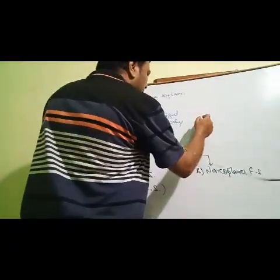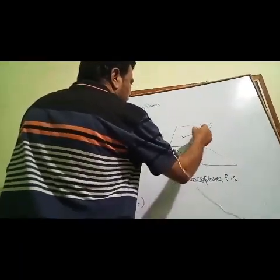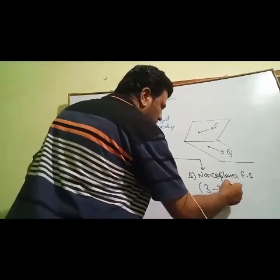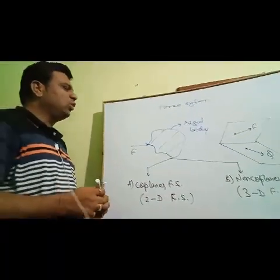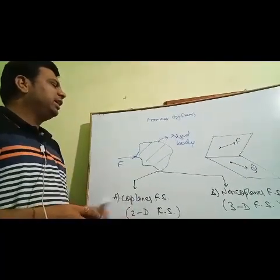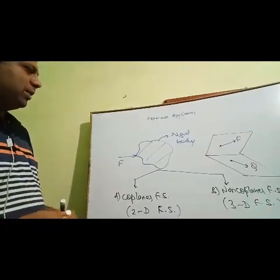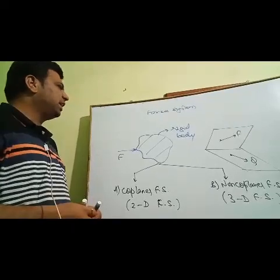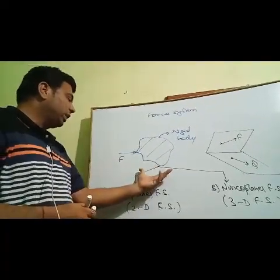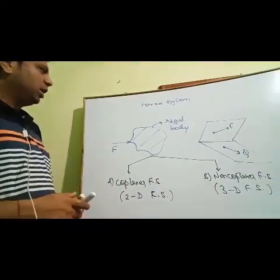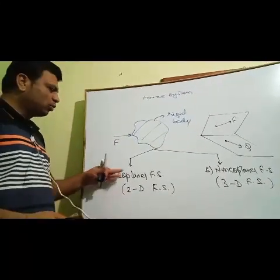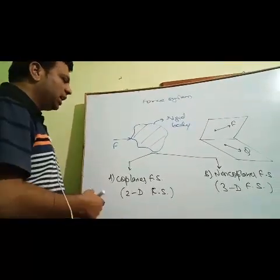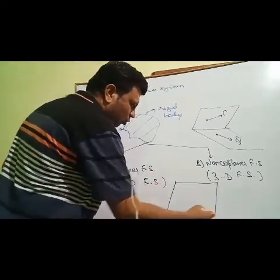When the forces acting on a rigid body do not lie in a single plane, then it is known as a non-co-planar force system or three-dimensional force system. There are two types of force system: co-planar and non-co-planar. If the forces lie in one plane it is co-planar; if they do not lie in one plane it is non-co-planar.